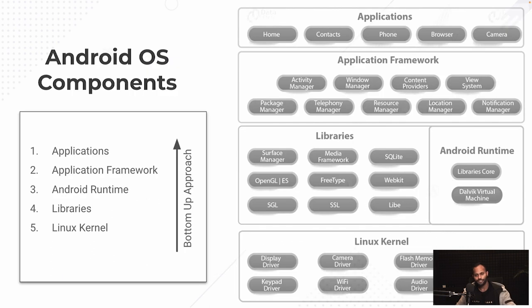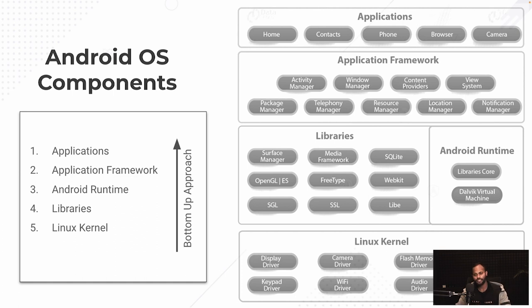Now let's jump into the topic - what are the different components and the architecture of an Android operating system? There will be five components to it. We will always do it in a bottom-up approach, wherein the bottom part is the Linux kernel. On top of that are libraries and, in the same layer, Android Runtime (ART). Above that is the application framework, and then on top is applications.